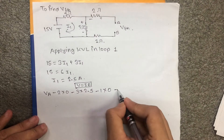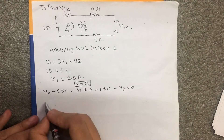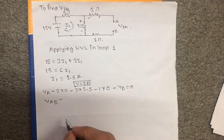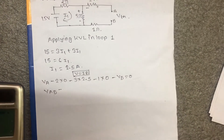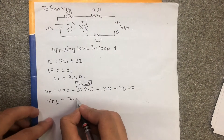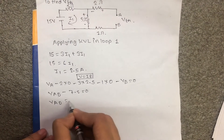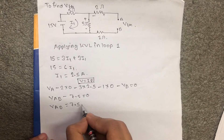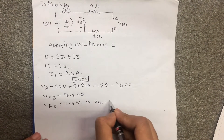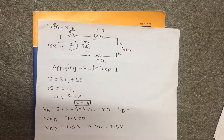Applying KVL at node B: minus Vb equals zero. The voltage across the 3 ohm resistor equals 3 times 2.5, which equals 7.5 volts. Therefore Vth equals 7.5 volts.